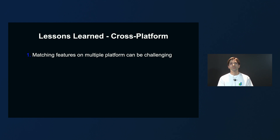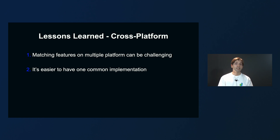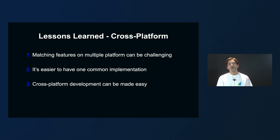Our second lesson is about cross-platform matching. Matching features on multiple platforms can be challenging if you can only rely on native APIs, and re-implementing features may sometimes be required. If you are re-implementing something, it's easier to aim for one common implementation — you'll have a perfect match of features across your platforms, and you'll have fewer bugs to fix, as debugging on one platform can translate into solving other platform problems. Cross-platform development can seem a daunting task, but it can be made easy with a smart code architecture. We recommend building a platform abstraction layer, because that has allowed us to share the core logic and save time.